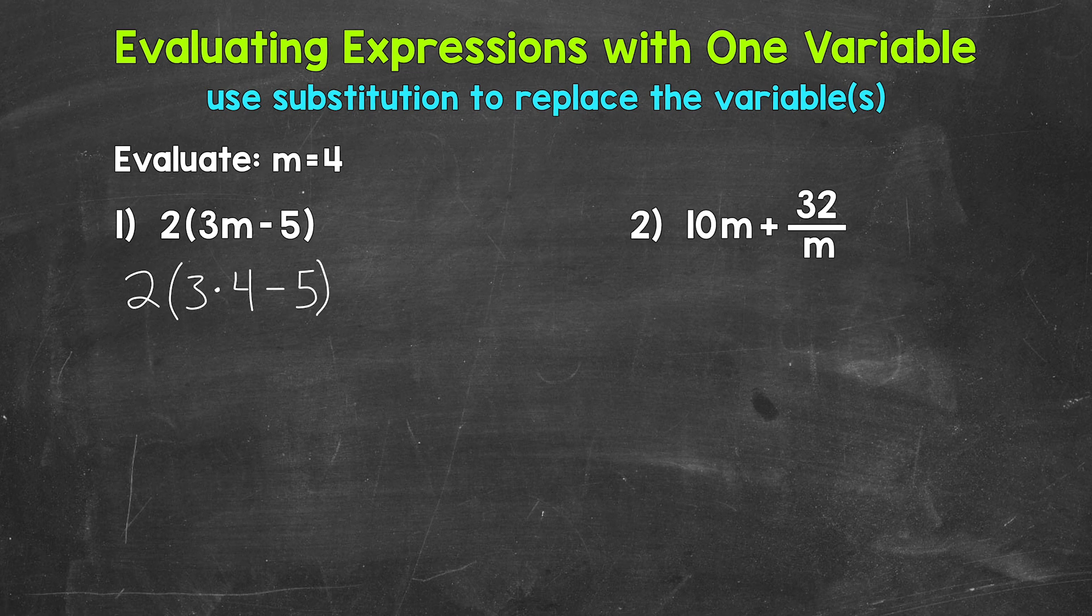Do we have any parentheses? Yes, so that's our priority. Now we have multiplication and subtraction within those parentheses. Multiplication comes before subtraction, so let's start with 3 times 4. 3 times 4 equals 12. Bring down everything we did not use, so the subtraction sign, the 5, the parentheses, and the 2. We still have subtraction within the parentheses, so let's do 12 minus 5 next, which equals 7.